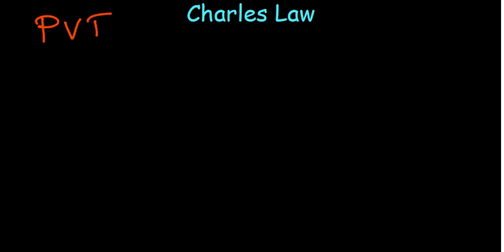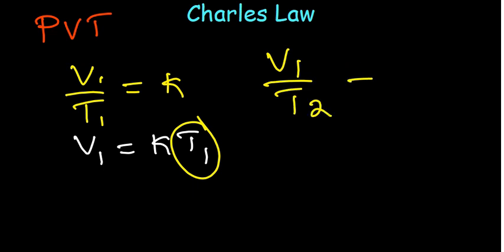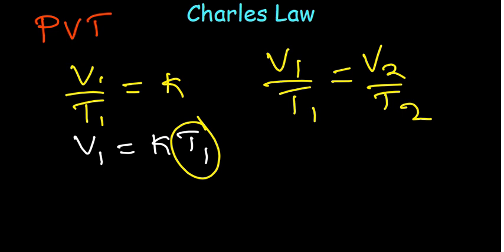Charles's law relates volume and temperature: V/T = k, or V₁/T₁ = V₂/T₂. The volume of a fixed quantity of gas at constant pressure is directly proportional to its absolute temperature. As temperature increases, volume also increases. What is missing from this equation — pressure — is held constant.